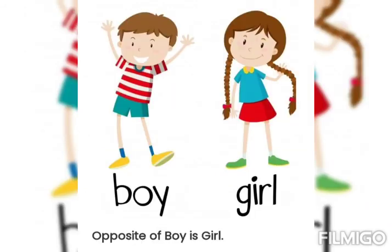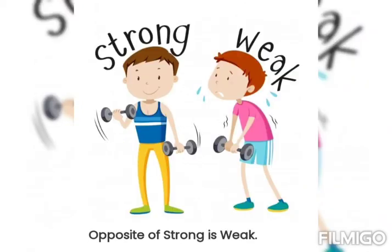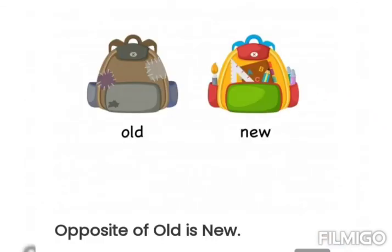Boy, girl — larka, larki. Strong, weak — balwan, kamzor.